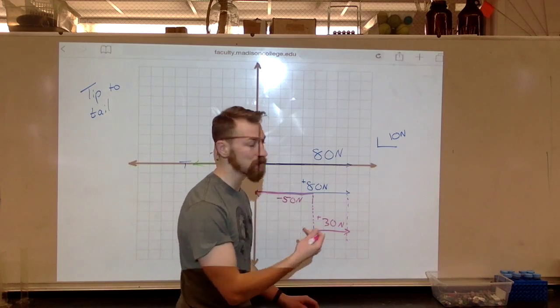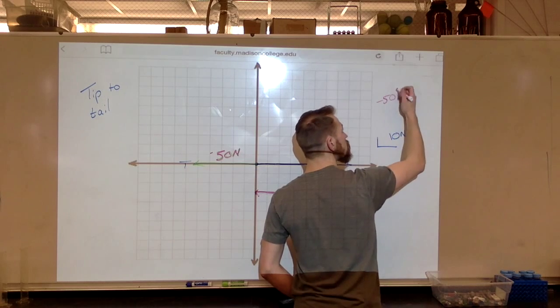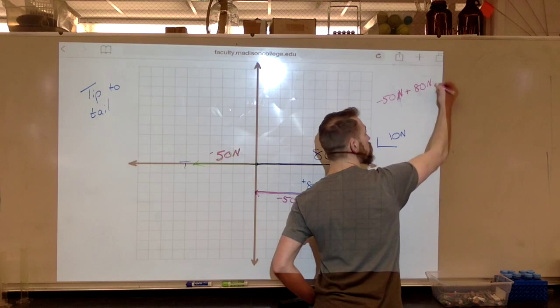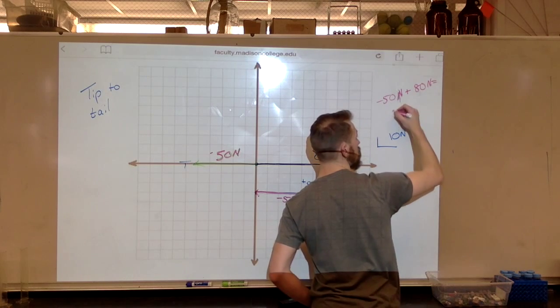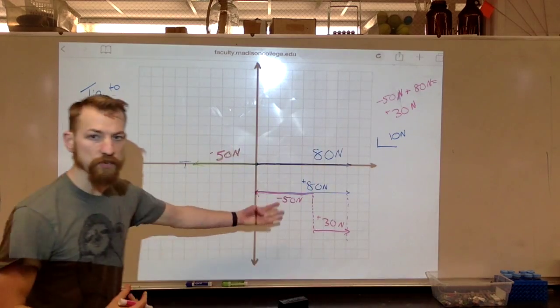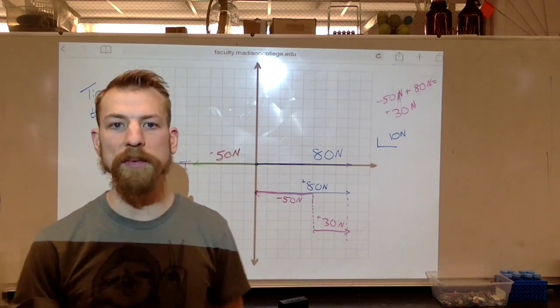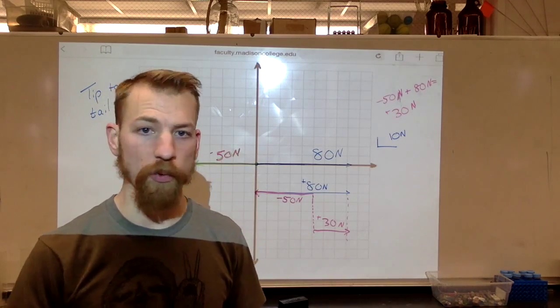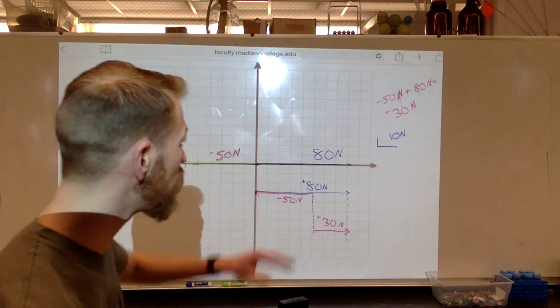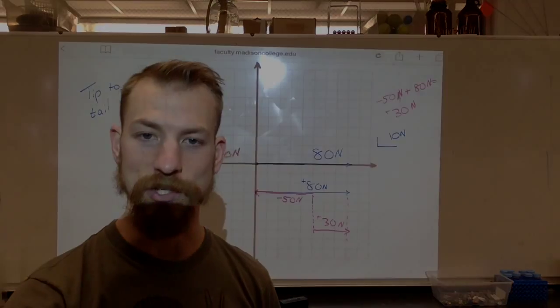And we can do this mathematically as well. And I know that you guys can do this mathematically. Negative 50 newtons plus 80 newtons equals positive 30 newtons. I just wanted to show you guys this tip to tail method of adding vectors because it will come into use when we're adding vectors that aren't actually parallel. I think that we'll practice this tip to tail method a little bit more and we'll talk about it a lot more in the next video. See you soon!